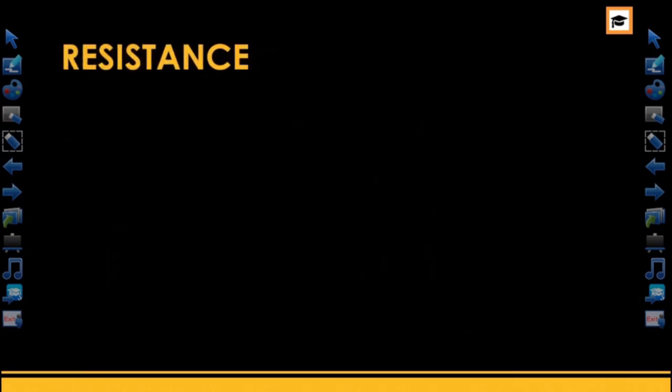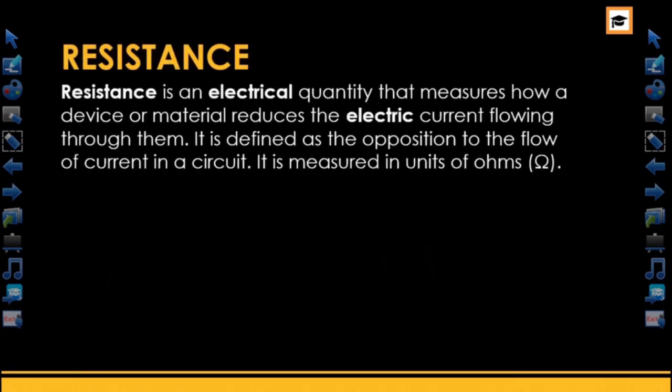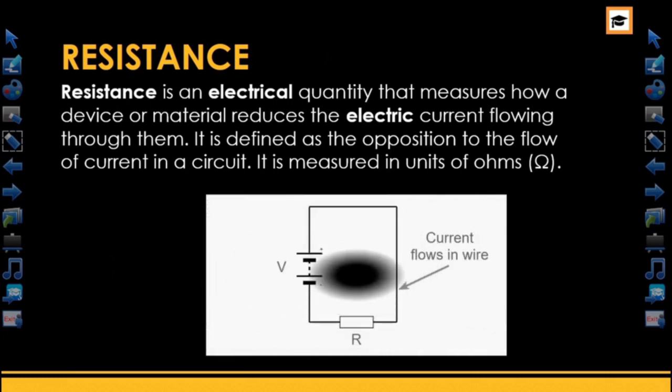Now let's take a look at resistance. Just as the name implies, resistance is the opposition to the flow of current in a circuit. It is an electrical quantity that measures how a device or material reduces electric current flowing through it. It is measured in ohms, and in circuit analysis the symbol for resistance is R.